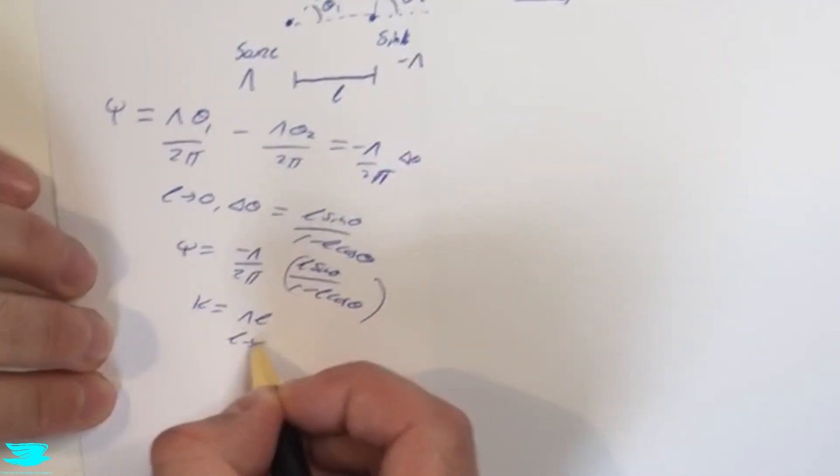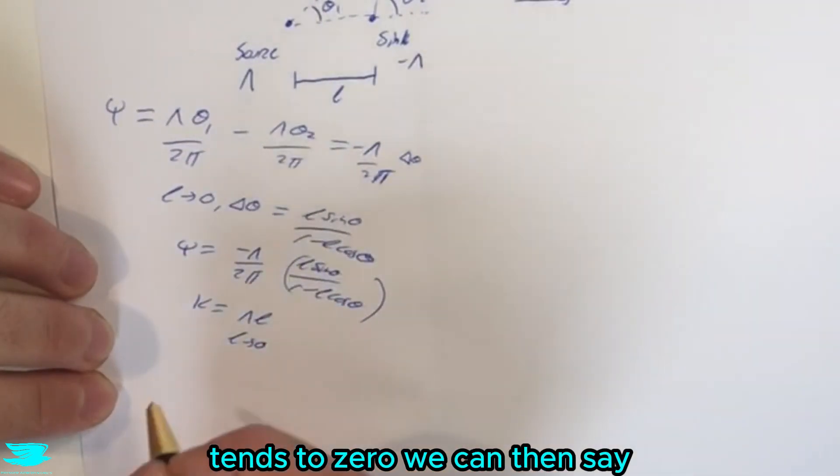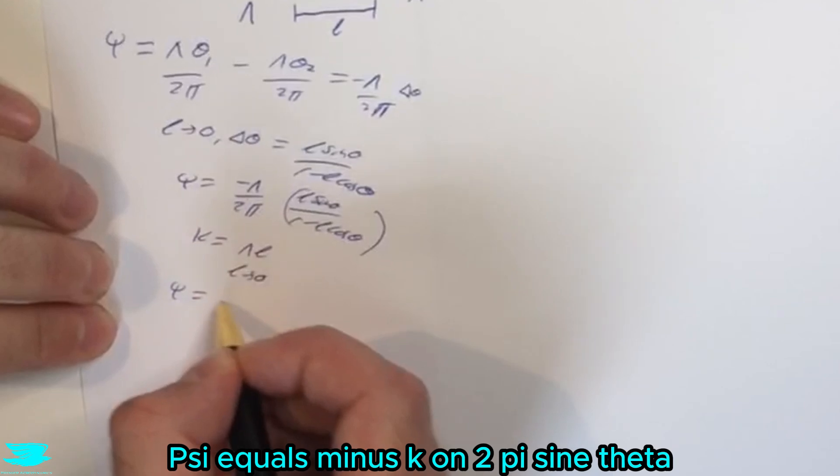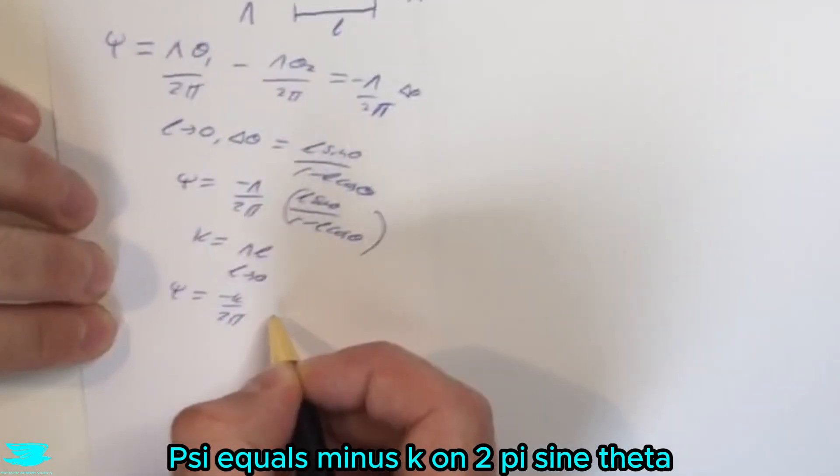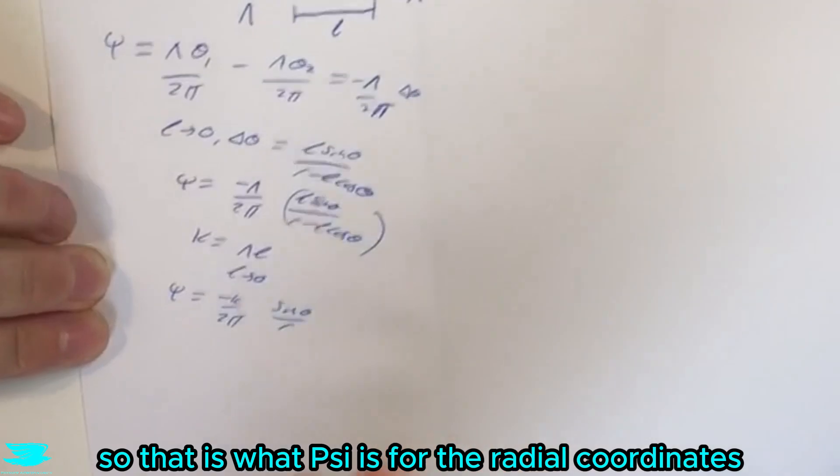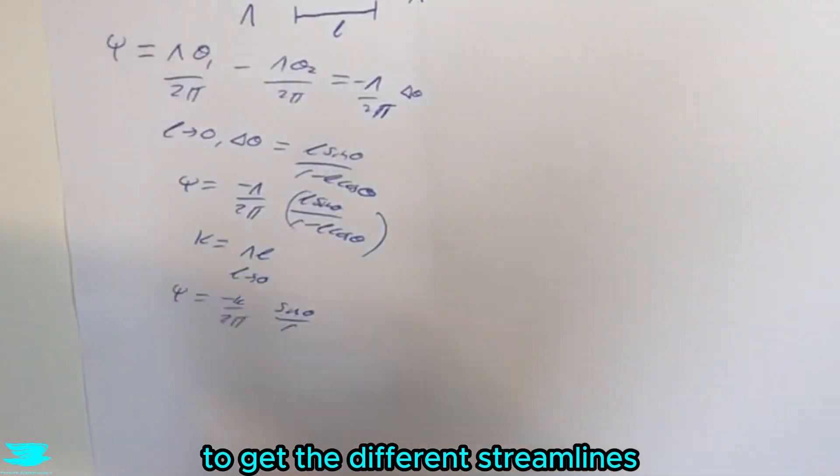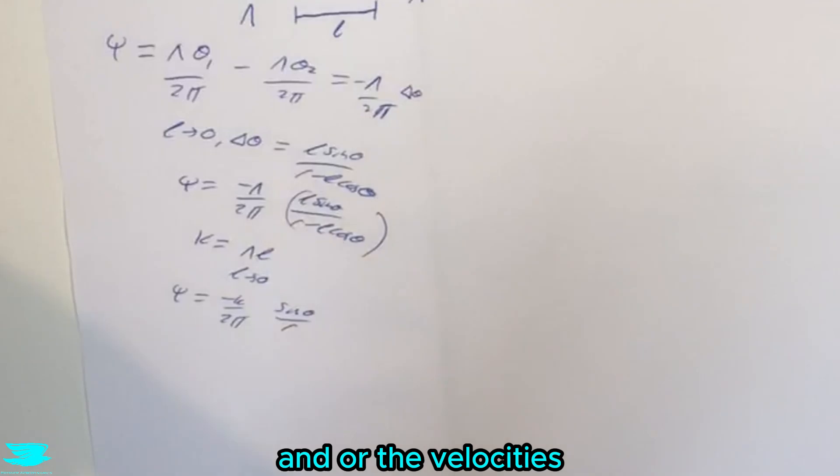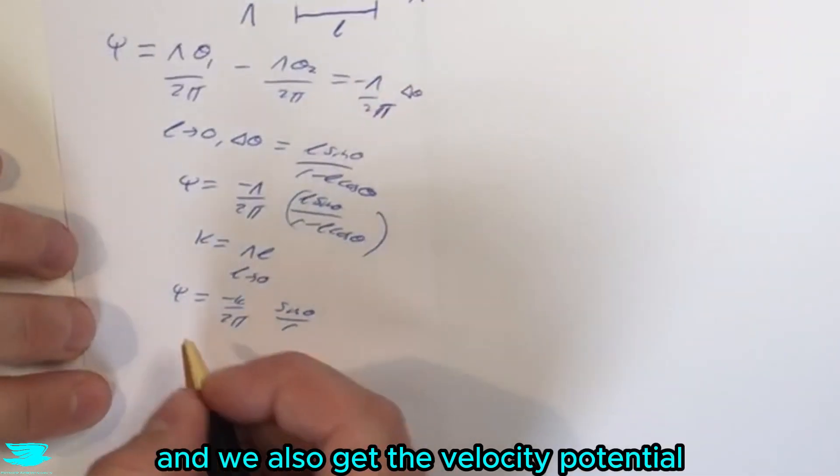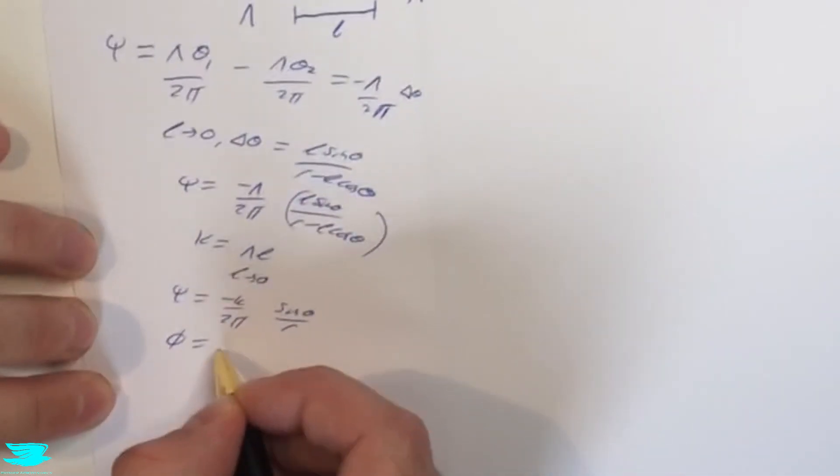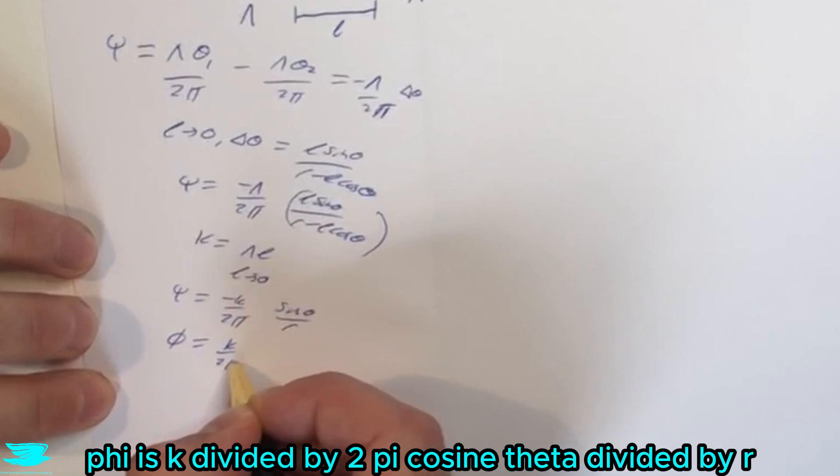So we can get rid of that top L in the numerator there. So as L tends to zero, we can then say psi equals minus k on 2 pi sin theta divided by R. So that is what psi is for the radial coordinates. And we can differentiate that again to get the different streamlines and or the U and V velocities. And we can also get the velocity potential, phi is k divided by 2 pi cos theta divided by R.